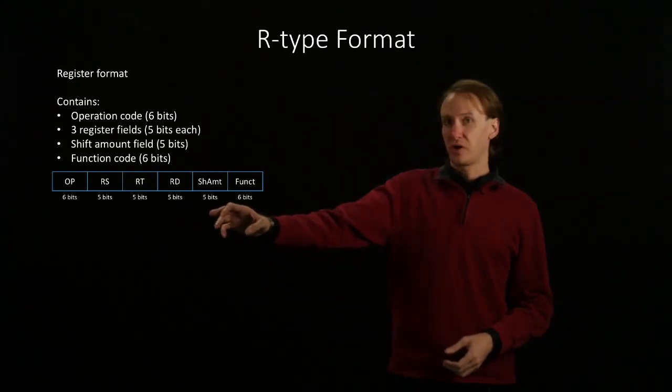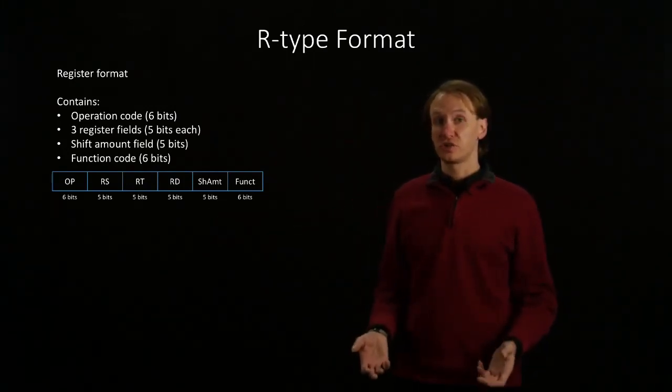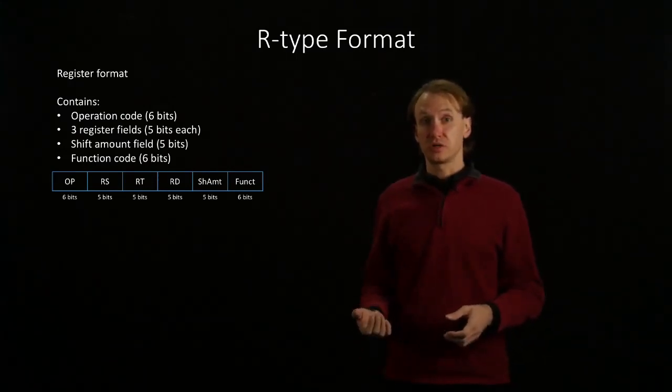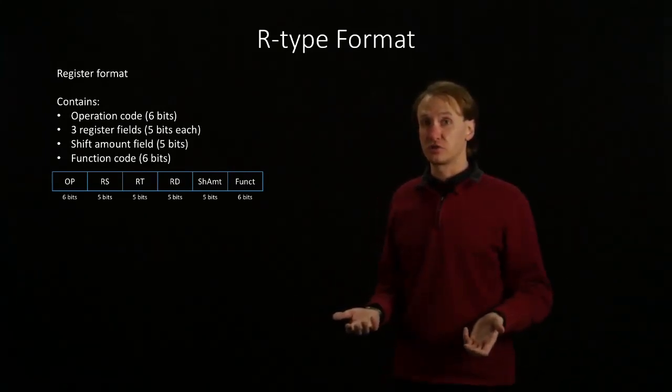The fifth element that we've got is a shift amount. We'll really only use this field for shift instructions. Otherwise, we'd set it to zero. This will allow us to shift the result up to 32 bits, either left or right, as required for our instruction.